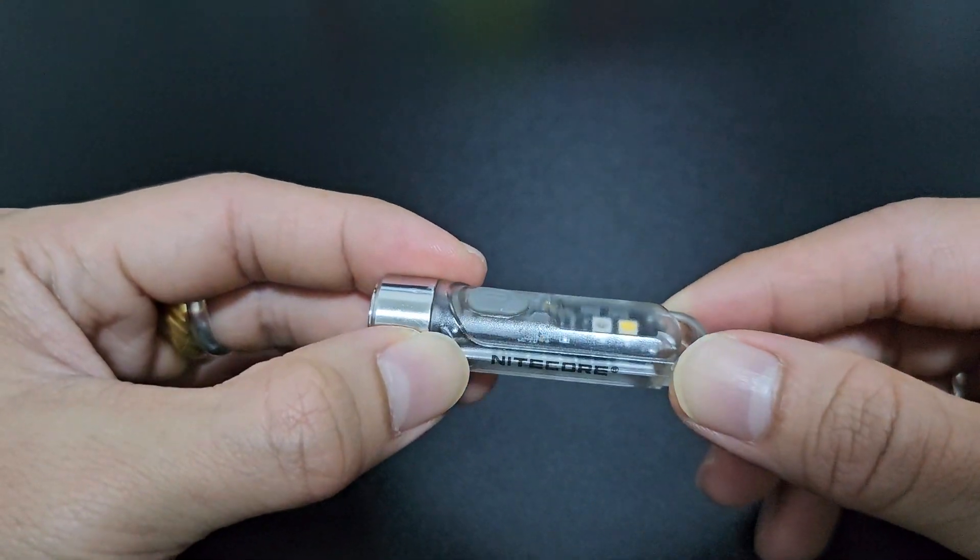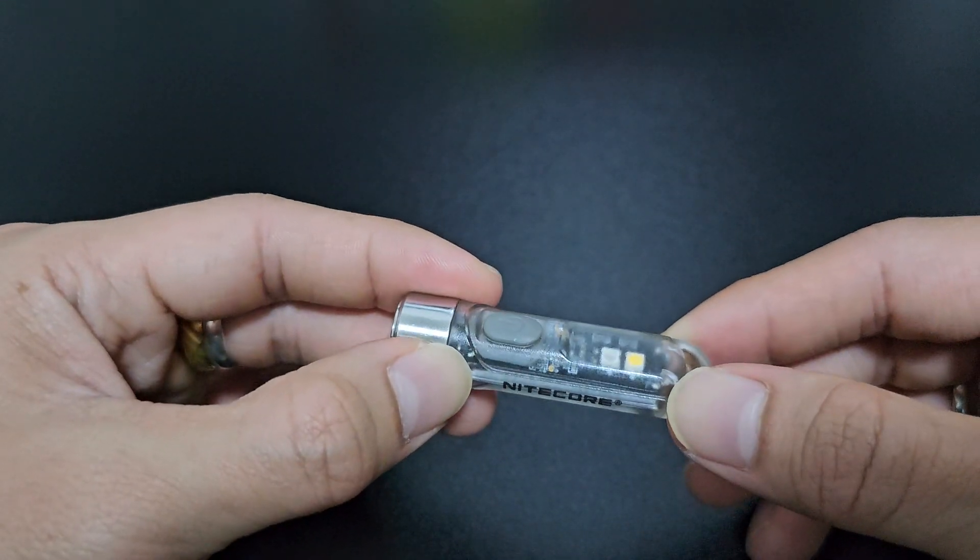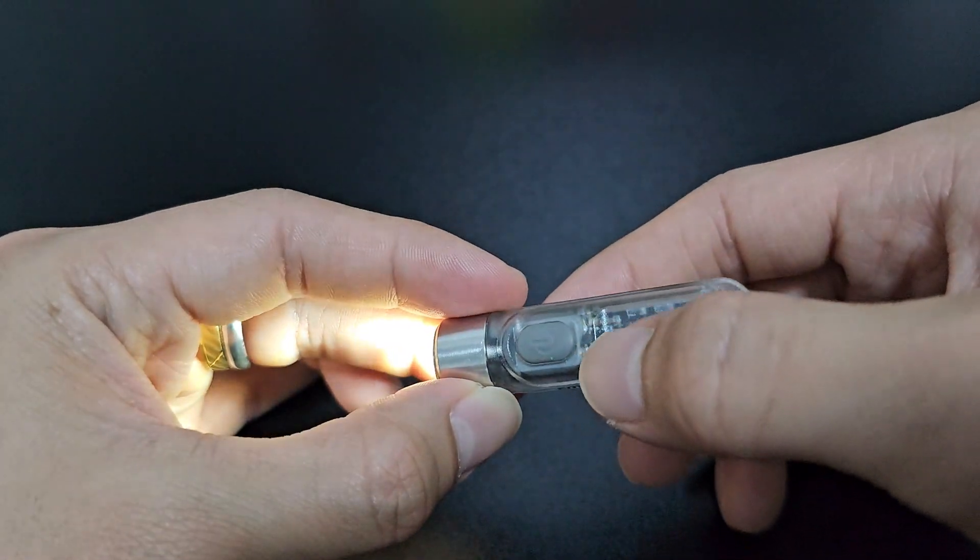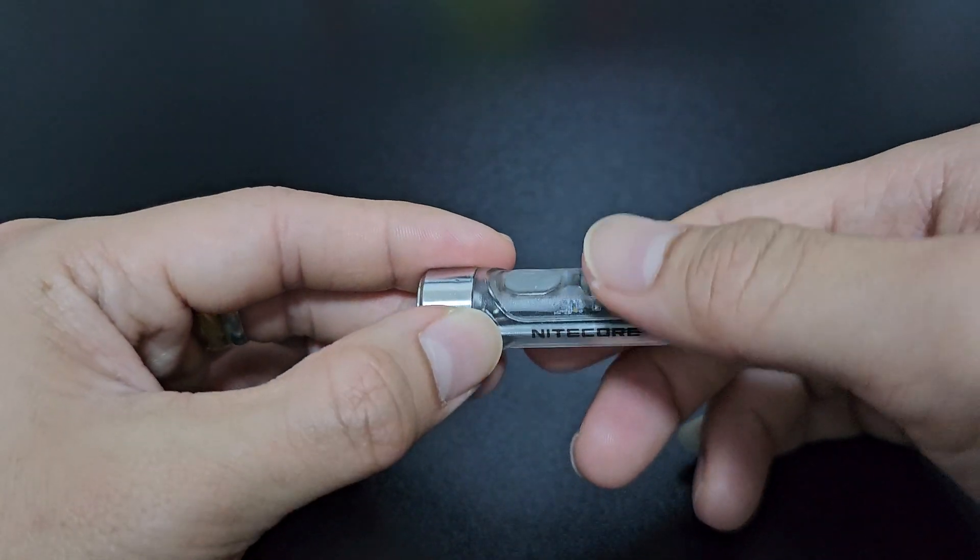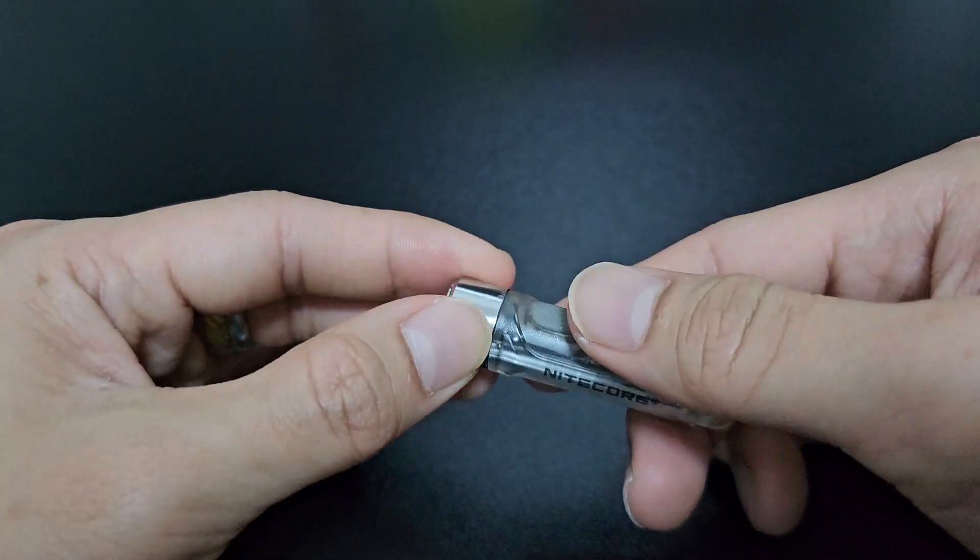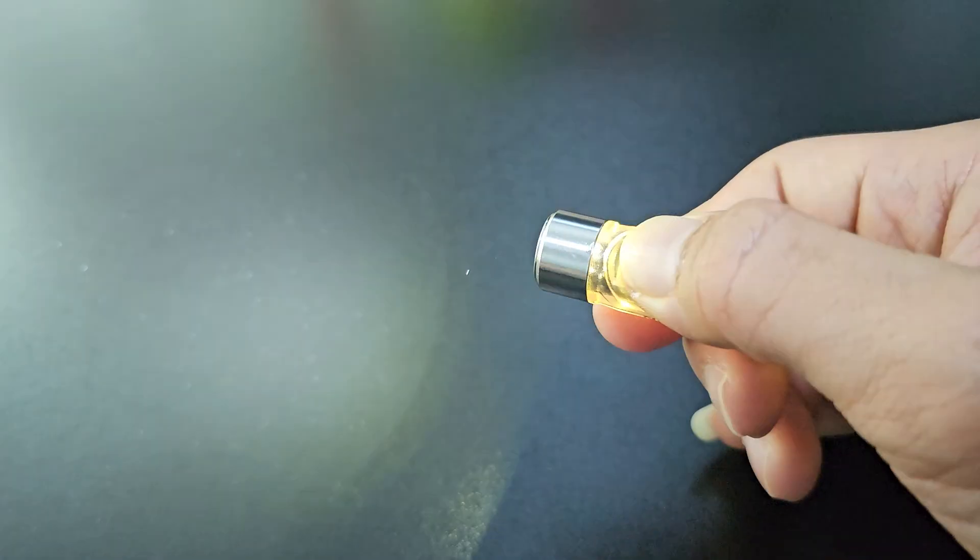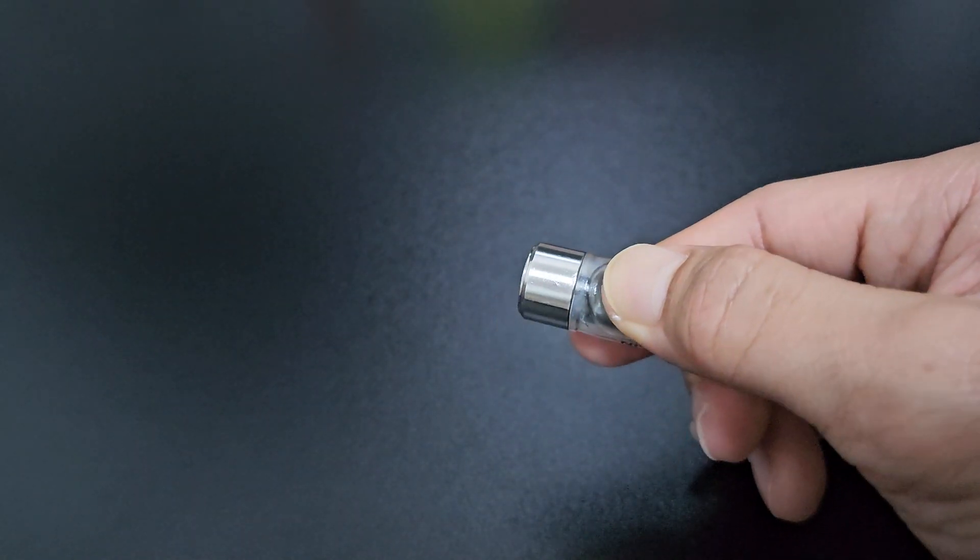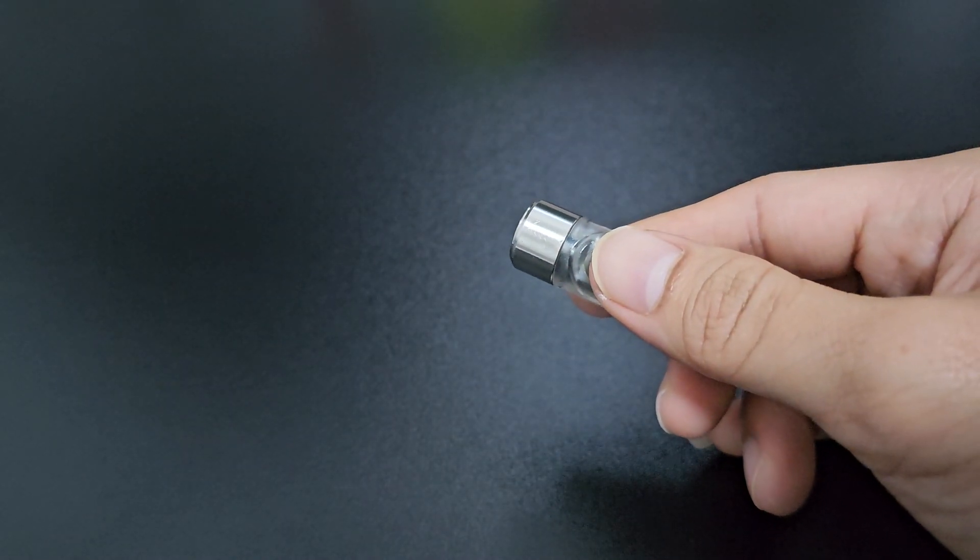So this is very good for accidental activation prevention. You can't activate by one press, you have to do a two press on it. Another way to activate this, like what I've just shown, is to press and hold the power button, and this gives you straight to the turbo at 300 lumens, the high mode. And it's very useful when you need the short burst of light immediately.